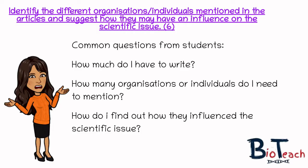The second question I get is how many organisations or individuals do I need to mention? Some of the individuals or organisations might be mentioned across all three articles, so you should definitely mention those as part of your answer. I say to students that to be on the safe side you should plan to mention around three individuals and three organisations, essentially getting one mark for each. Alternatively you could mention six individuals or six organisations, but a combination of both is safer and gives you a better chance of obtaining the full marks.